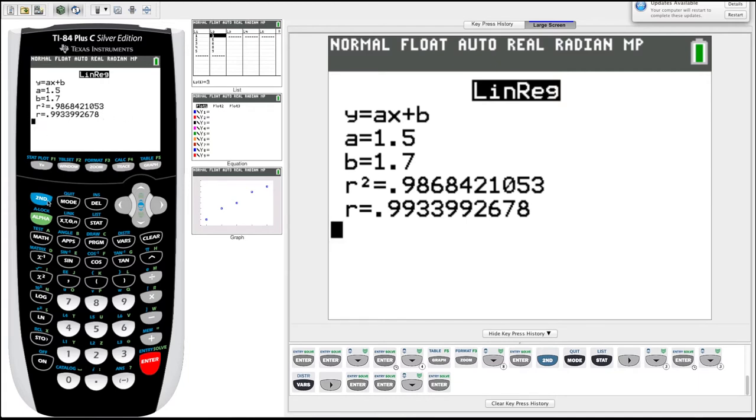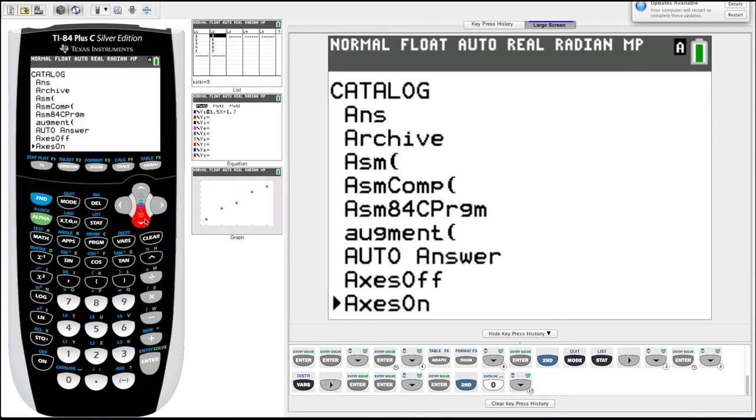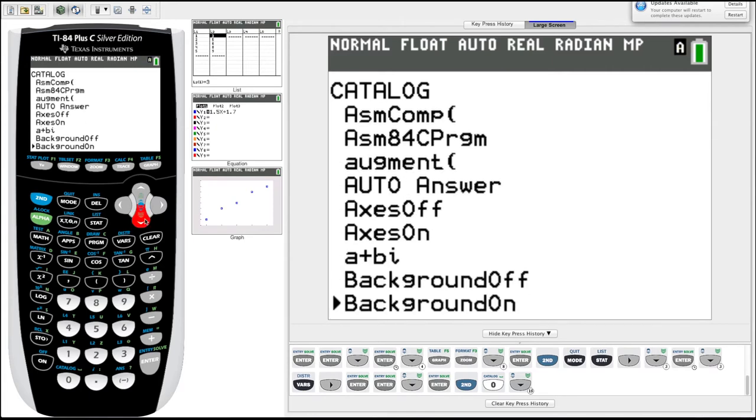If you don't see those on your first go through, you gotta hit this second button, go down to zero where it says catalog. Second zero. And if we scroll down, we're going to scroll down to, until we get to the d, we're going to look for something called diagnostic on.